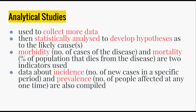Next, analytical studies involve collection of more data, which is then statistically analyzed to help develop hypotheses as to the most likely cause of the disease. Two indicators used are morbidity — the number of cases of the disease — and mortality — the percentage of the population that dies from the disease. Data about incidence (the number of new cases) and prevalence (the number of people affected in a population at any one time) are also compiled. This is more quantitative data, whereas descriptive studies are more qualitative.